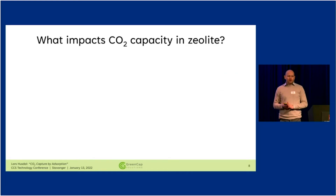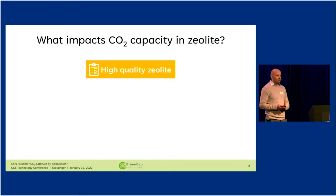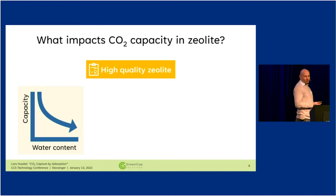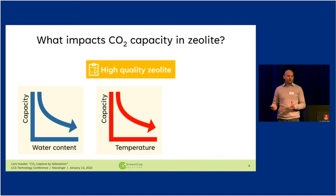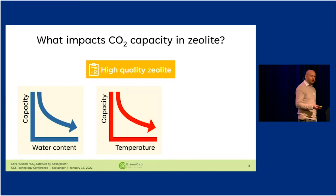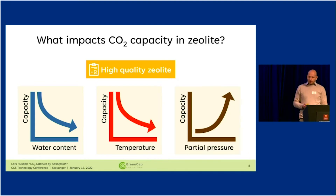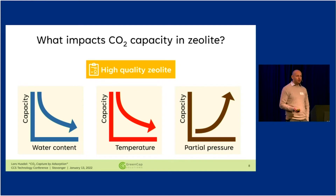What can we do to maximize the effectiveness of our zeolite? First, we want a high-quality zeolite. As I just said, water is our enemy, so we want as dry air as possible. Temperature is also an issue — we want to use as little energy as possible, but higher temperature means molecules have higher kinetic energy and can easily be released. So if we decrease the temperature, the average kinetic energy goes down and we can increase the capacity. Finally, the partial pressure — the amount of CO2 in the air. For direct air capture it's 400 ppm, but for point capture with concentrations of say 4%, the capacity of the zeolite will increase.